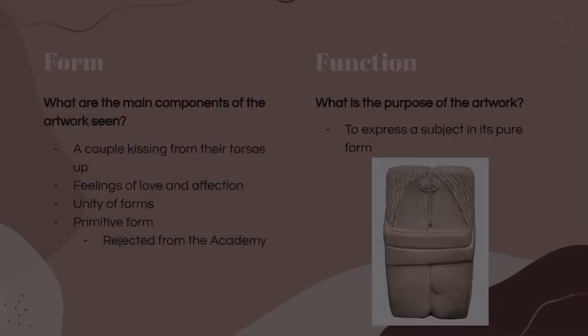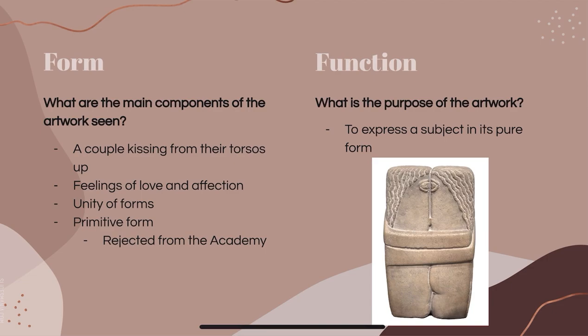For form, the main components of the artwork are a couple kissing from their torsos up, and it brings out a feeling of love and affection with the loving embrace. The two subjects are barely differentiated to show the unity of the forms. It's also a more primitive form, which was rejected from the academy.